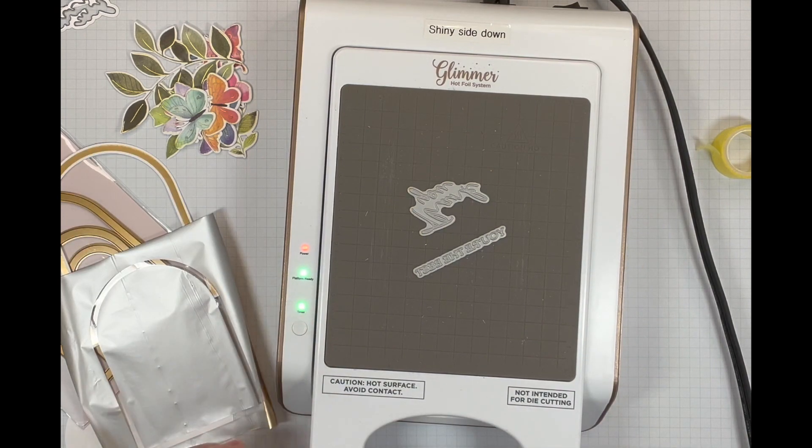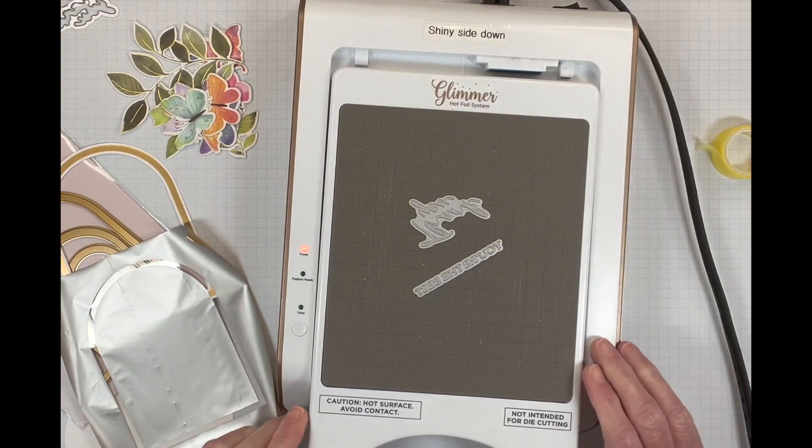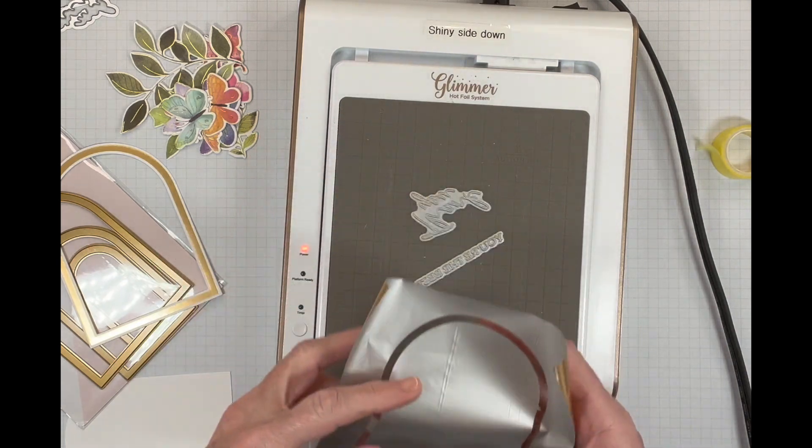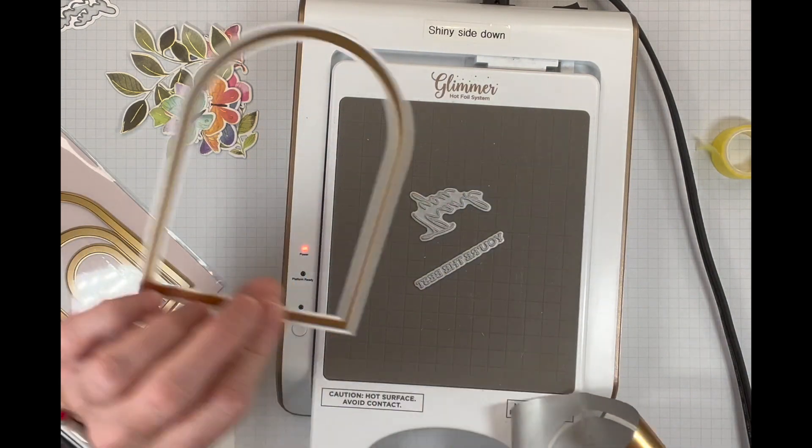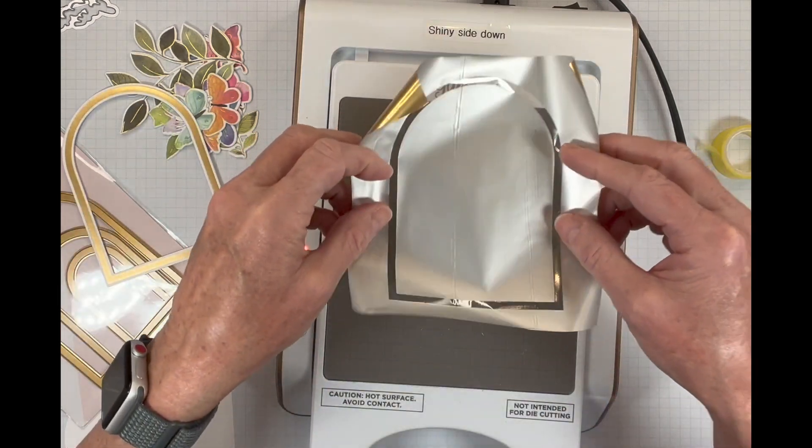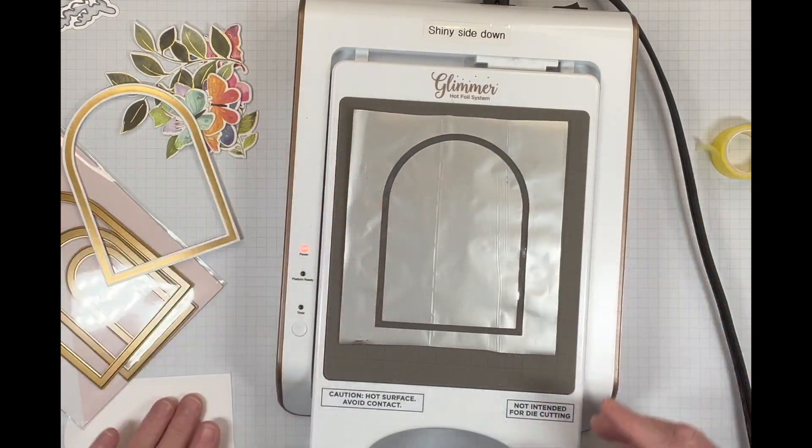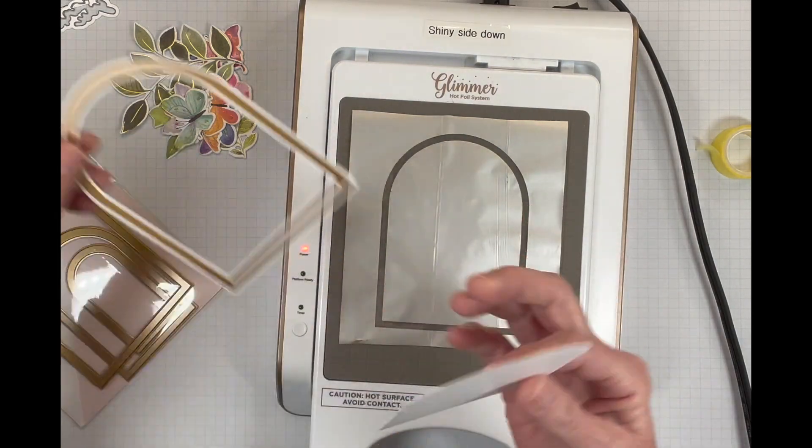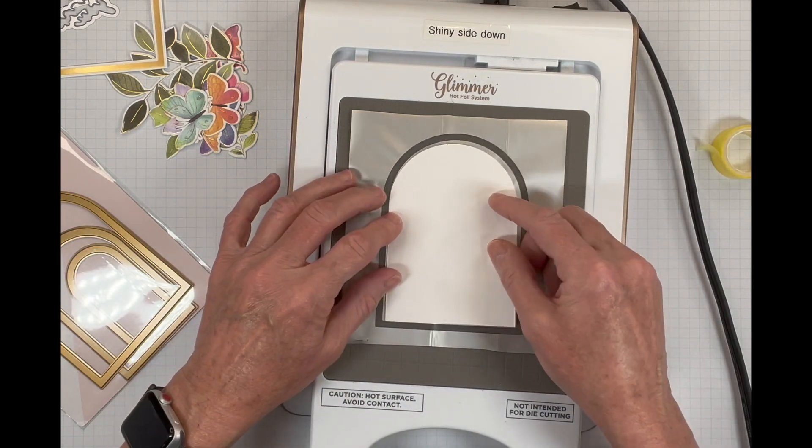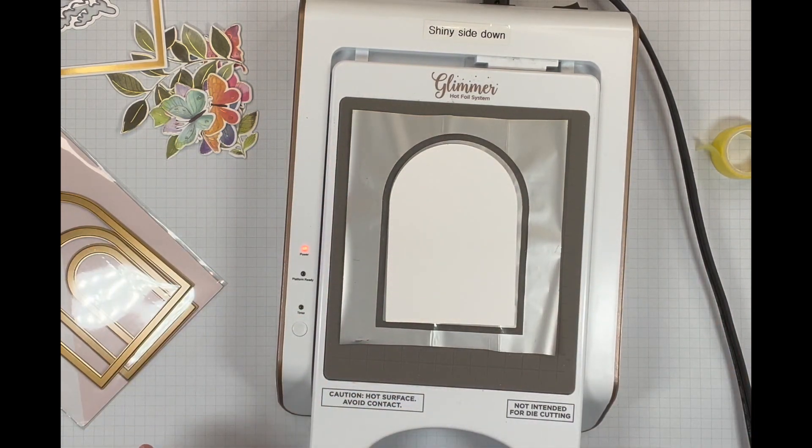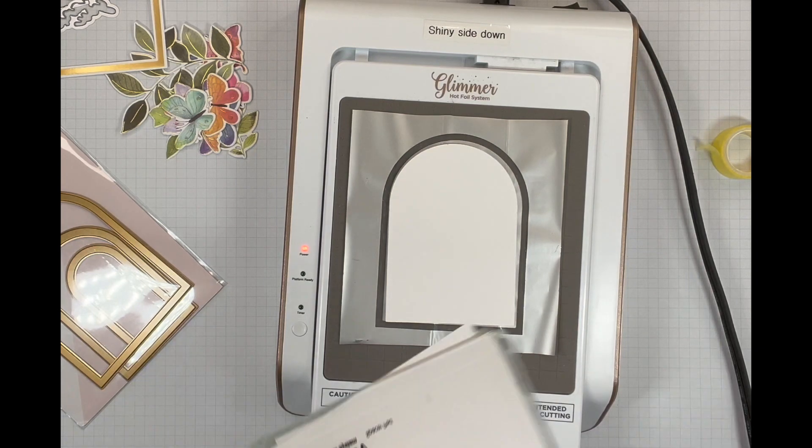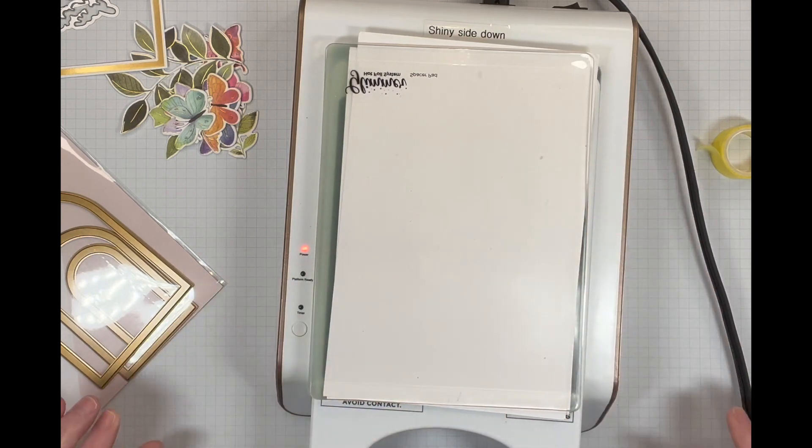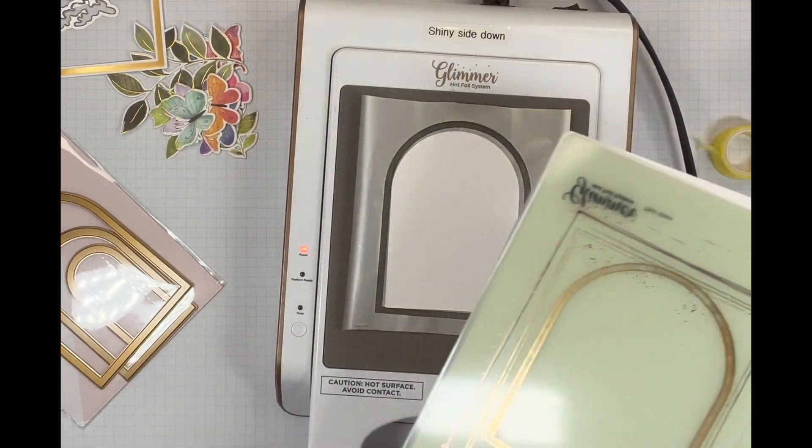So our timer has gone off, which means it's nice and hot. We can pull that out of there. Mine always seems so snug. So I'm going to use that piece left over from when I hot foiled my arch. So I'm just going to place that right over my sentiments. And then I am also using the piece that came out of the center. It just made me feel good to be a little bit more economical and not waste that foil. I mean, I know I could probably still get a lot more out of it, but at least this makes me feel a little better. Now I'm going to run that through.